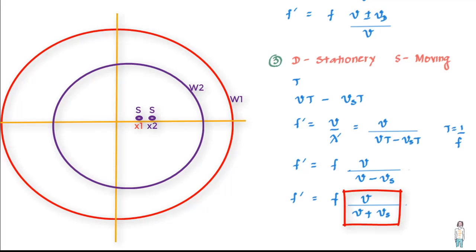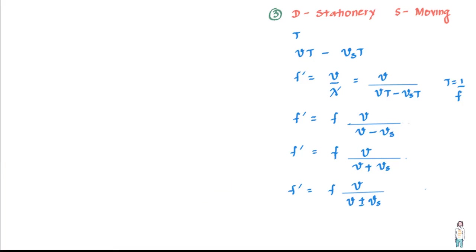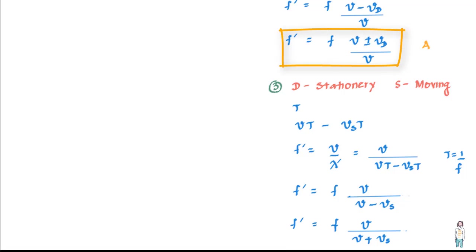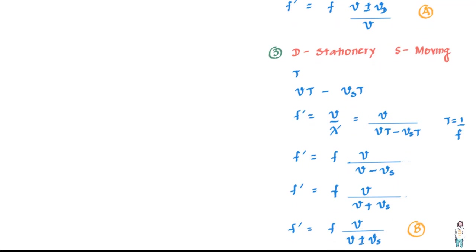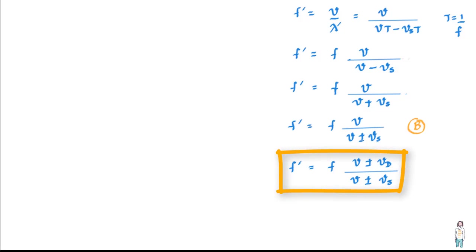When the source is moving and the observer is stationary, the general equation is F' = F times V divided by (V ± Vs) — call this Equation B. Combining this with the earlier Equation A for a moving observer, we get the general Doppler equation: F' = F times (V ± VD) divided by (V ∓ Vs). Use the correct signs depending on what is moving in which direction.